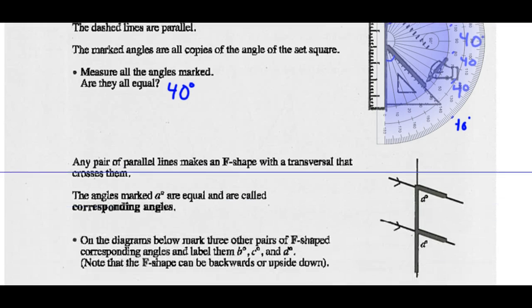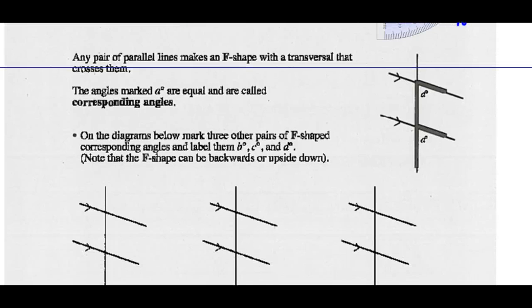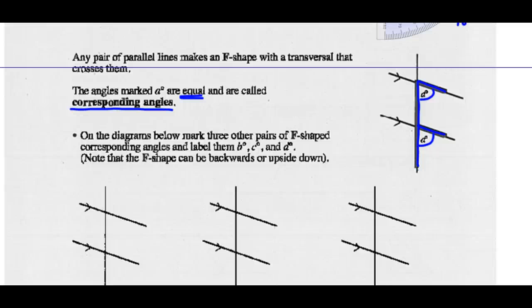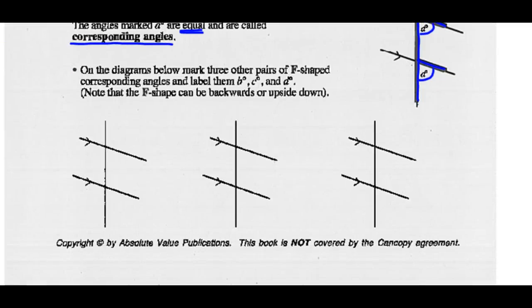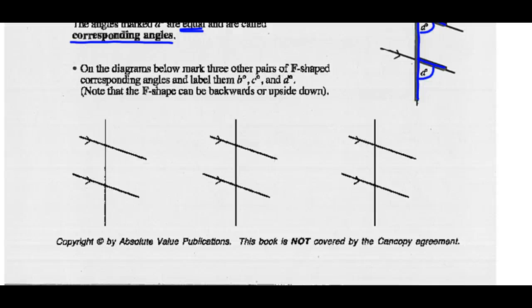Any pair of parallel lines makes an F shape with a transversal that crosses them. The angles marked A degrees are equal and are called corresponding angles. You can see the F pattern right here — A degrees here and A degrees there. They're called corresponding angles and they're equal in measure, so they're both labeled as A. On the diagrams below, mark three other pairs of F-shaped corresponding angles and label them B, C, and D.